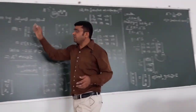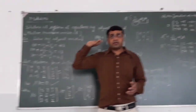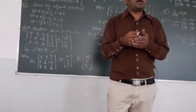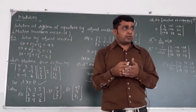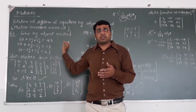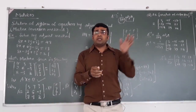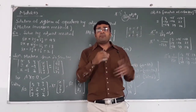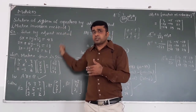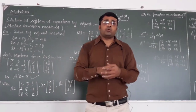So this is the method to solve a system of linear equations by the adjoint method — meaning we find the inverse using the adjoint method. This is also called the matrix inversion method, because we find the inverse first and then use it to solve the system. Thank you.